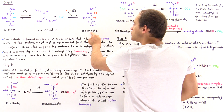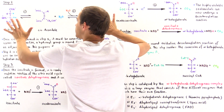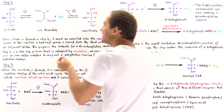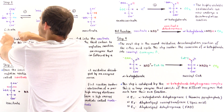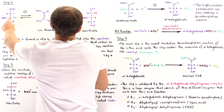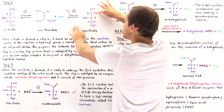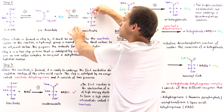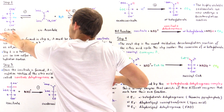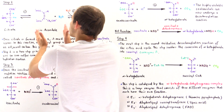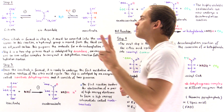Citrate and isocitrate are actually isomers — they have the same molecular formula but differ in the position of the hydroxyl group. On citrate the hydroxyl is attached to carbon 3, while on isocitrate the hydroxyl is on the adjacent carbon. To go from citrate to isocitrate we must pass through an intermediate, making step two a two-step process.